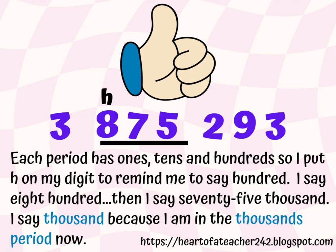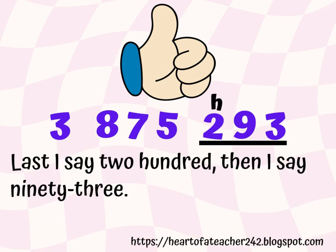Then I say 75,000. I say thousand because I am in the thousands period now. So don't forget to put that little h. Last, I say 200. Then I say 93. Notice that I have put the h on top of the two to remind me that I need to say 100 after I say two.